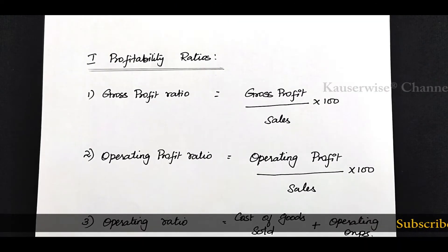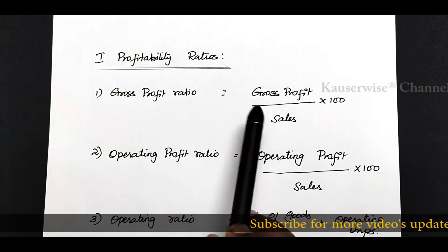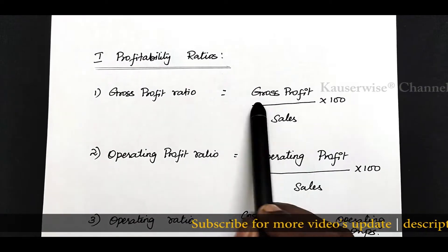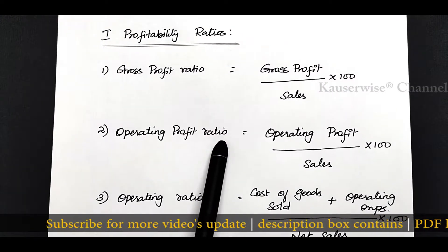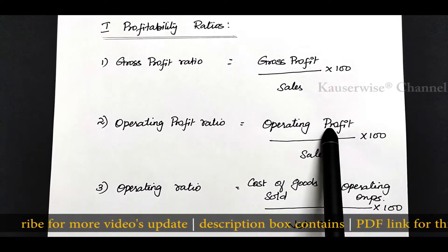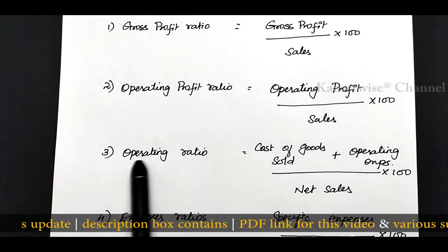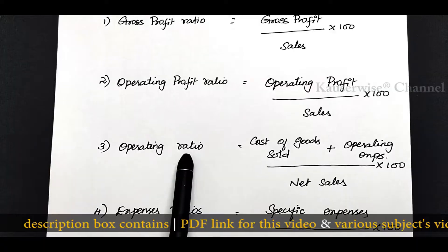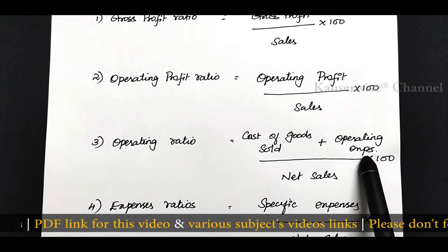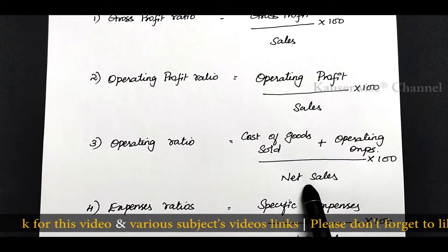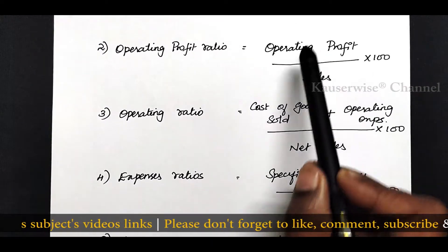Let us see the numerical problem based on these ratios. The first one is gross profit ratio — the formula is gross profit divided by sales into 100. For operating ratio, the formula is cost of goods sold plus operating expense divided by net sales into 100. This is the formula to find out operating ratio.